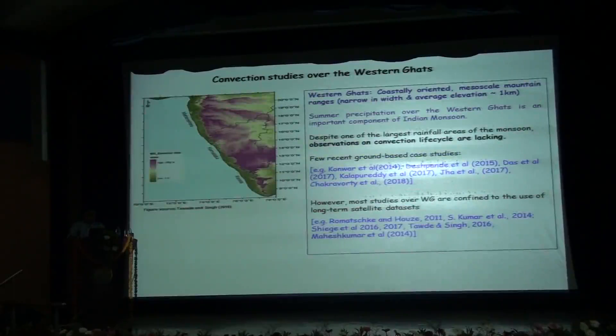The western ghats of India are the coastally oriented mesoscale mountain ranges as we can see here. Having a narrow width and an average elevation of one kilometer, they run parallel to the Indian west coast. Summer precipitation over the Indian west coast is an important facet of the Indian summer monsoon. Despite being one of the largest rainfall regions of the southwest Asian monsoon system, observation of convective life cycle is severely lacking over this region.